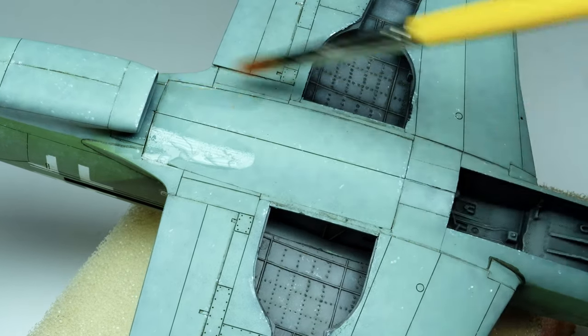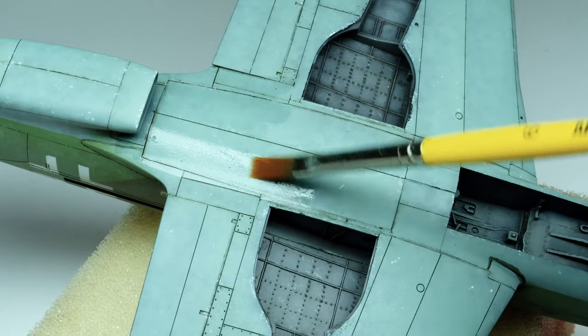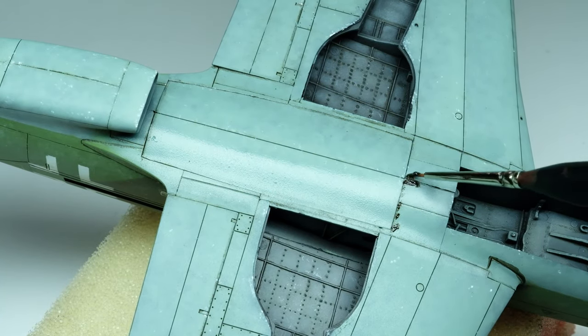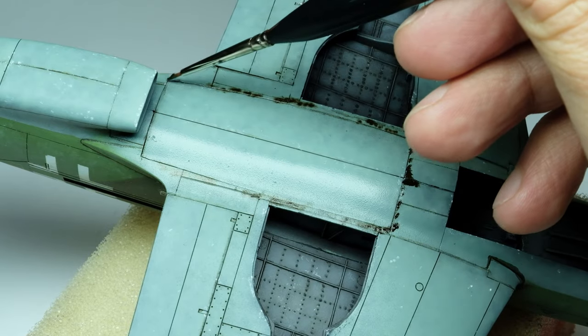In the last episode we finished weathering the top surface of the Dornier DO 335 scale model in 1:48 from Tamiya with oil colors, so now we continue weathering the bottom.